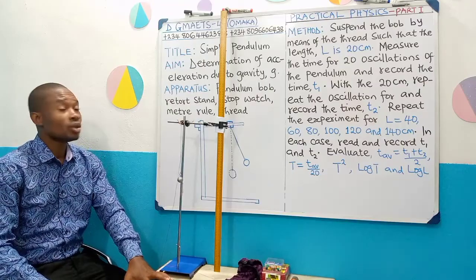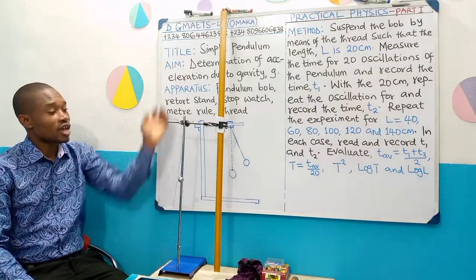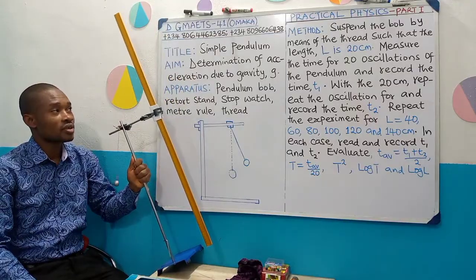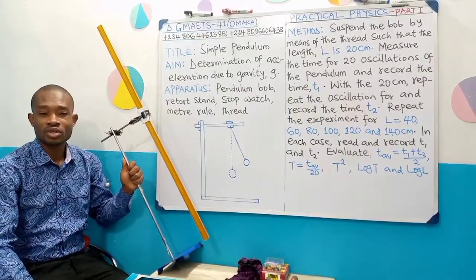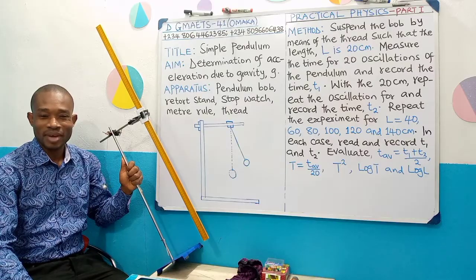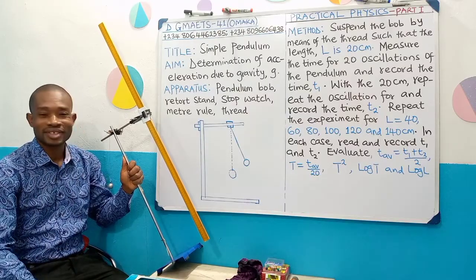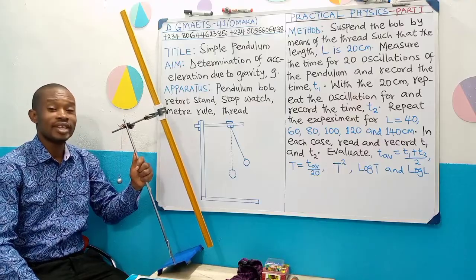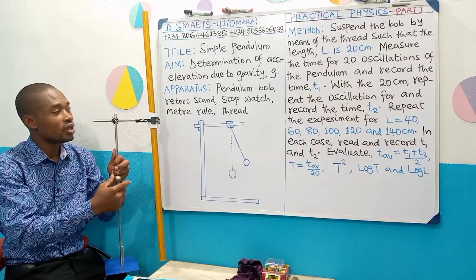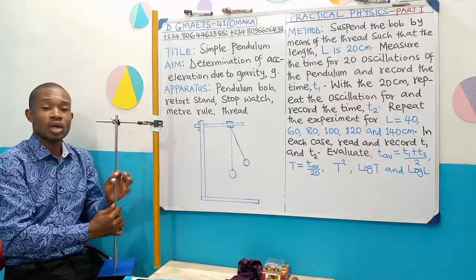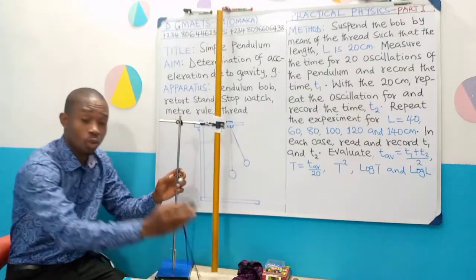To start with we are going to take a look at the title, the aim and the apparatus that we need. On the board you have the title - simple pendulum, that's the title of experiment. Our aim is to determine acceleration due to gravity, small letter g. You may have used a value of 9.8 m per square second or even 10 m per square second. What apparatus do we need? We need a simple pendulum, a retort stand, a stopwatch.